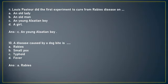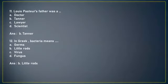Next question: Louis Pasteur's father was a (A) doctor, (B) tanner, (C) lawyer, or (D) scientist. The answer is B, tanner. Next question: In Greek, bacteria means (A) germs, (B) little rods, (C) virus, or (D) fungus. The answer is option B, little rods.